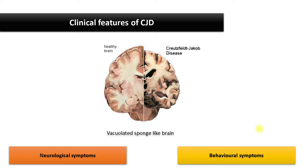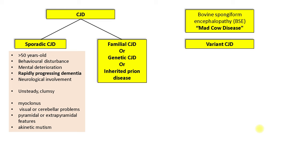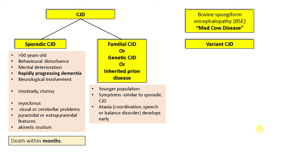The sporadic form usually affects individuals who are more than 50 years old. Patients present with both neurological and behavioral disturbances. Clinically, rapidly progressing dementia often raises the suspicion of CJD. Patients also show movement disorders like myoclonus, pyramidal or extrapyramidal symptoms, visual and balance disturbance, and akinetic mutism. Life expectancy is short, typically months from the time of diagnosis.